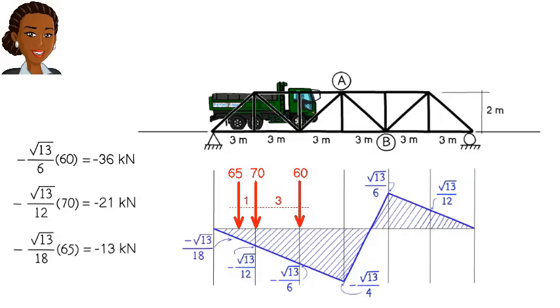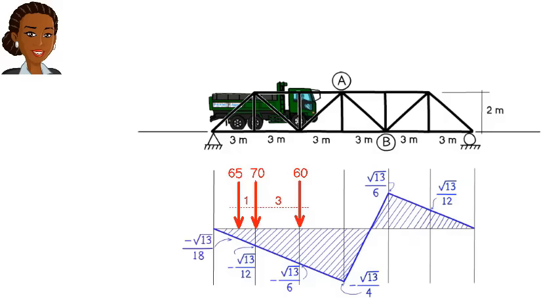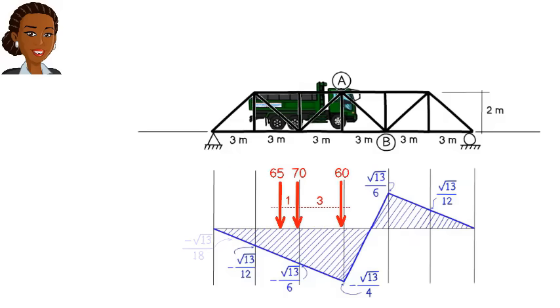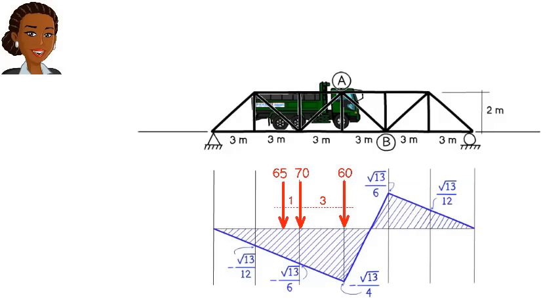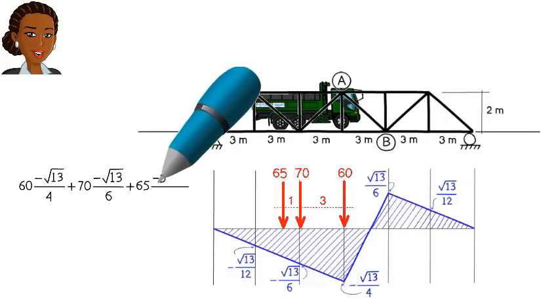Therefore, if all three loads are present at the same time, the total axial force in AB becomes negative 70 kilonewtons. Now, one can ask, is this the largest possible compressive force that can develop in member AB? To answer this question, we need to consider the other potential truck locations that create a large compressive force in AB. A visual inspection of the influence line suggests at least one more position for the truck that could produce a large member force. If the truck drives forward by 3 meters, we get this configuration for the load series. This position results in a compressive force of 129 kilonewtons in AB.